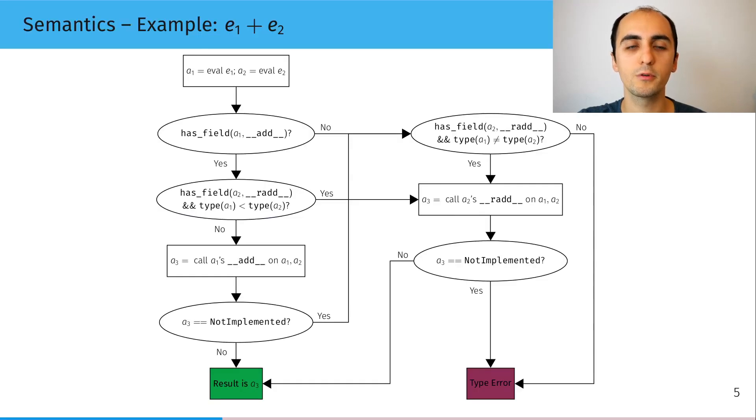To do that, we'll focus on the example of the addition of two expressions e1 and e2. So we first start by evaluating e1 into a1 and e2 into a2. And then depending on if a1 has an add field or a2 has an radd field and the type relationship between a1 and a2,